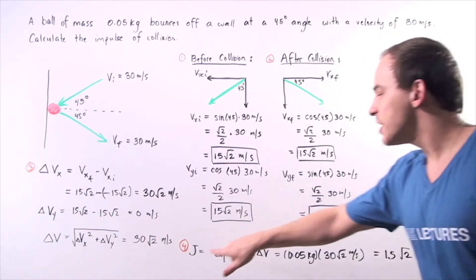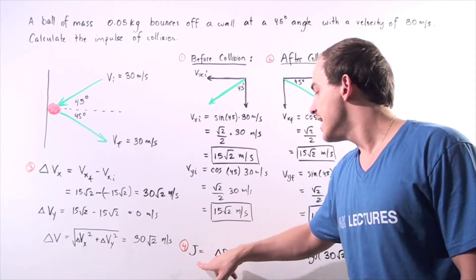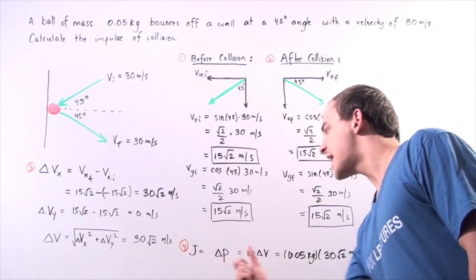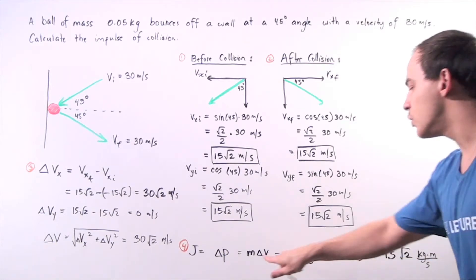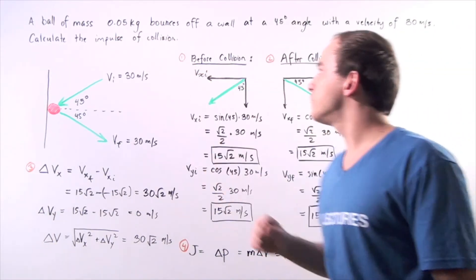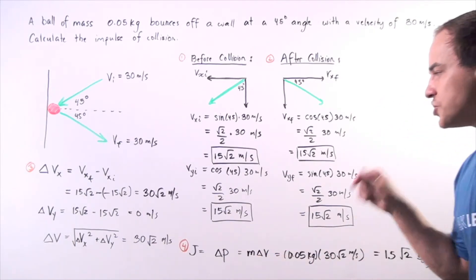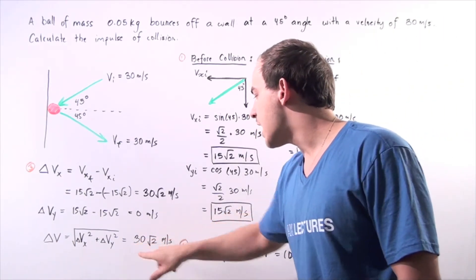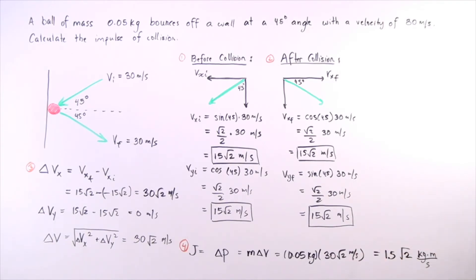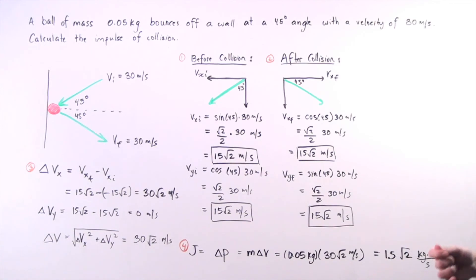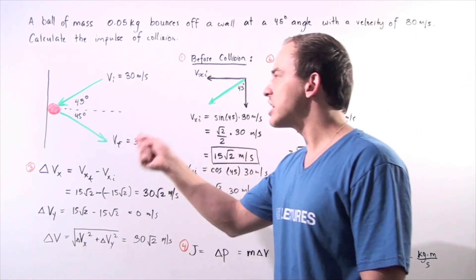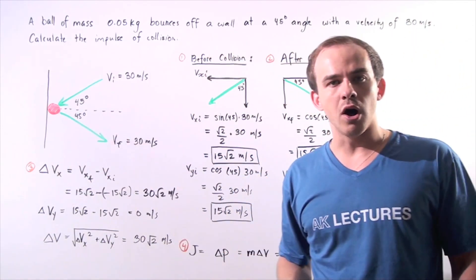To find the impulse, denoted by uppercase J, which equals the change in momentum, we multiply the mass of the object — 0.05 kilograms — by the change in velocity of 30 radical 2 meters per second. We get 1.5 radical 2 kilogram meters per second. This is our impulse, or change in momentum, of the object when it collides with the stationary wall.